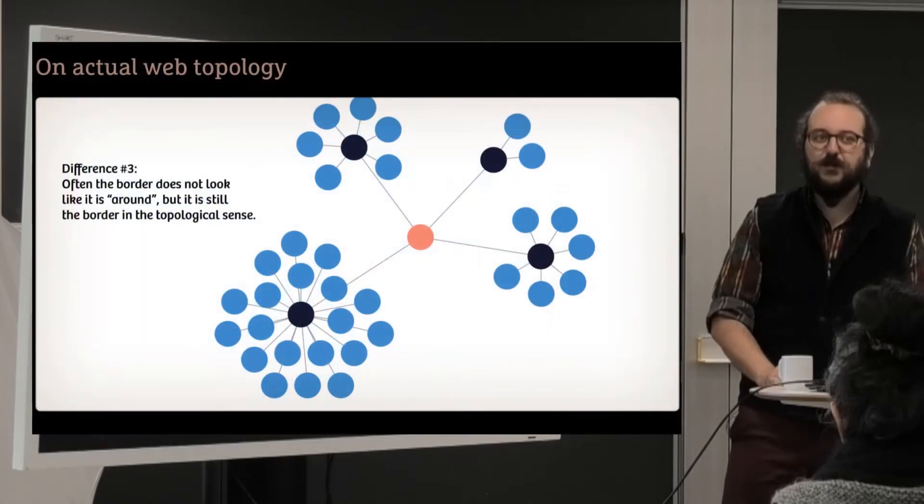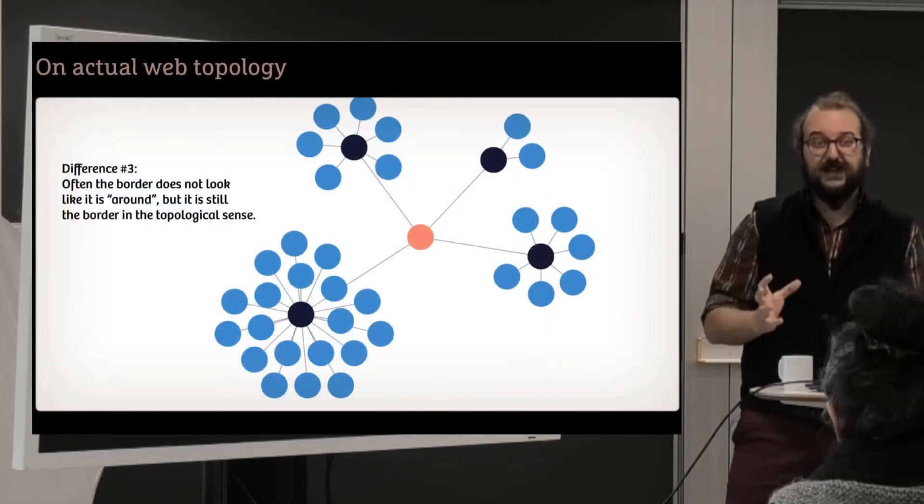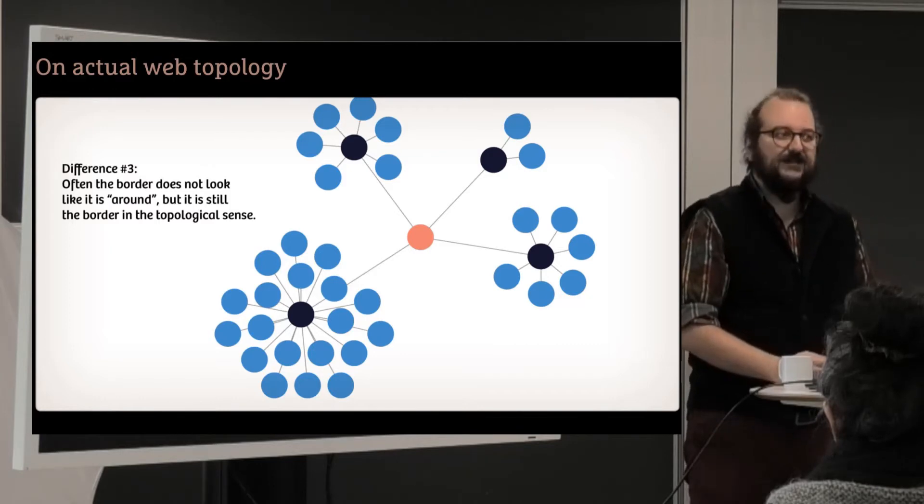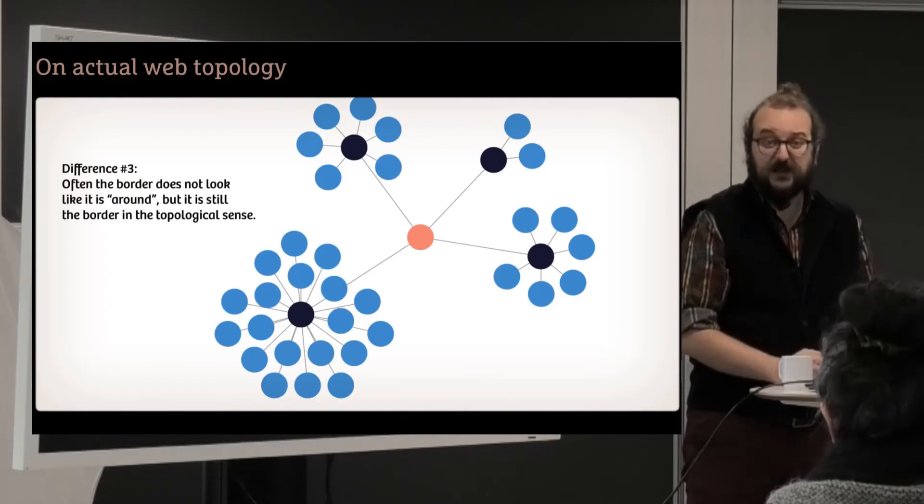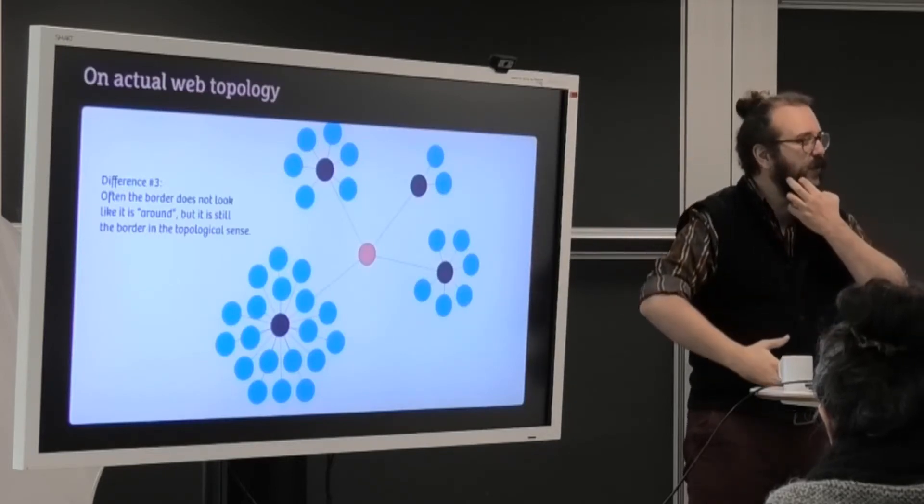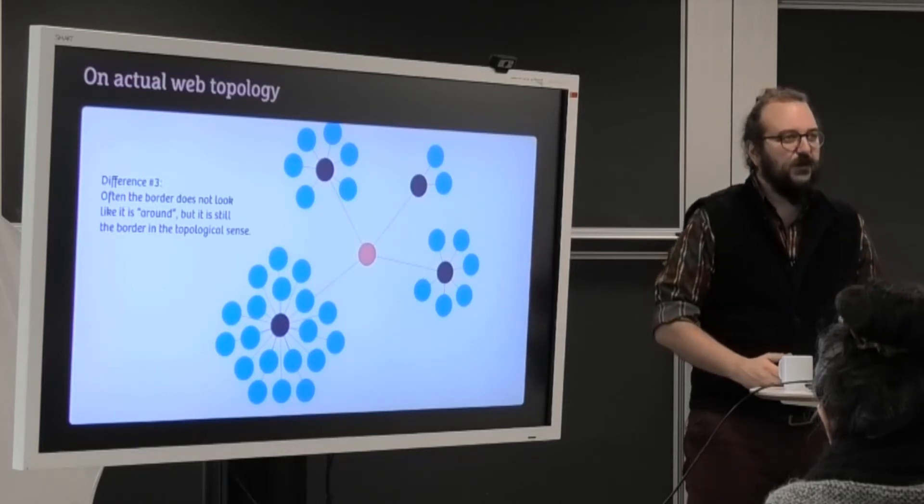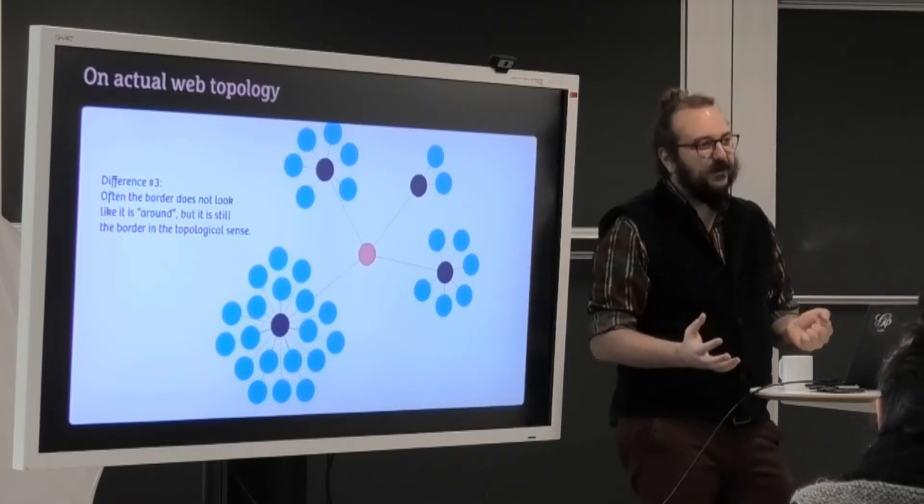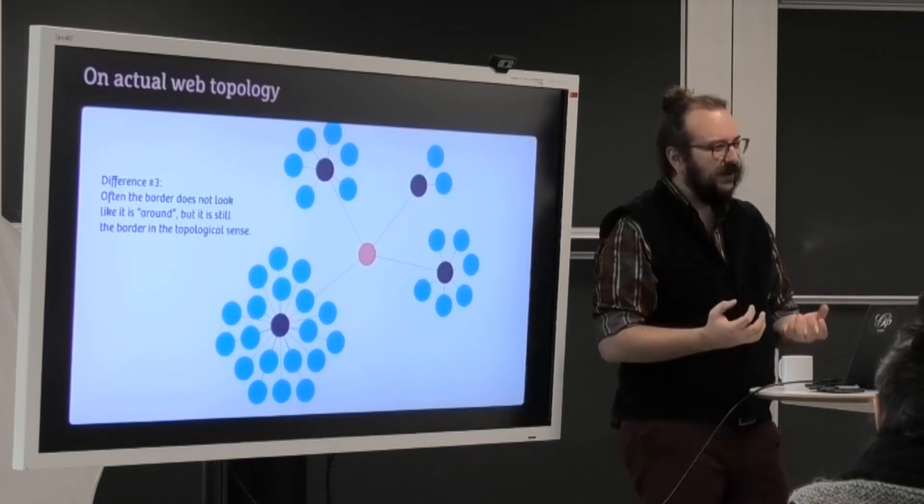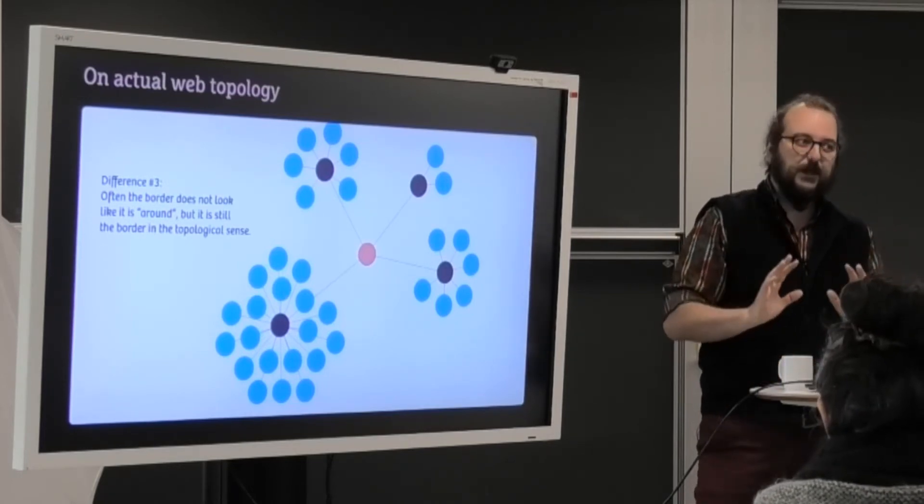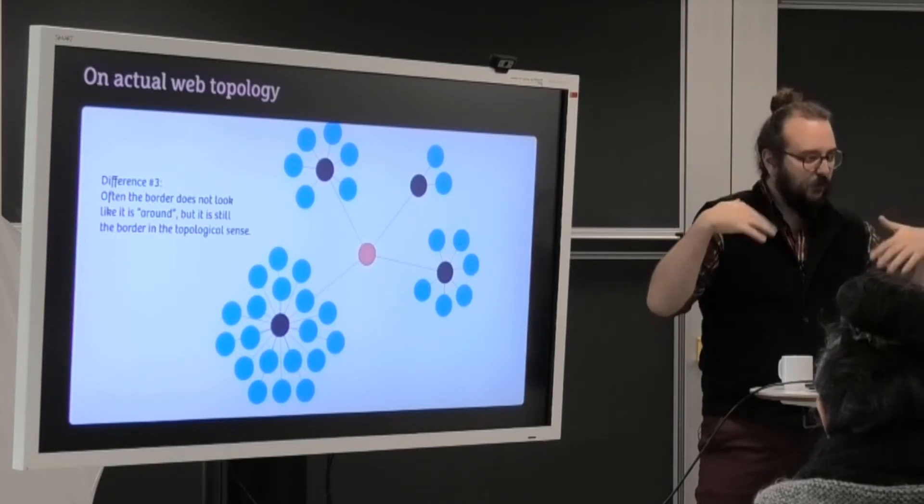And finally, this means that some of the frontier, some of the border is not around, but in the center, which is unintuitive. But let's say you don't want Wikipedia. Wikipedia will be a neighbor to many, many web entities in your website. So even though it's kind of the exterior border, it's also in the middle of your corpus in some ways because everyone cites it. So it's good to figure out that the border is around, because in the topological sense it is around, but this around in the weird topology of the web is also sometimes in the middle, in the center.